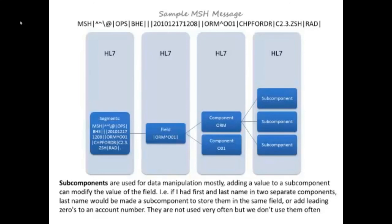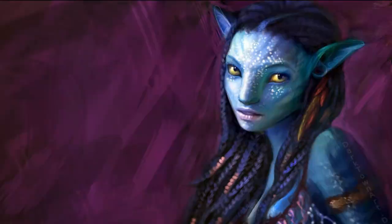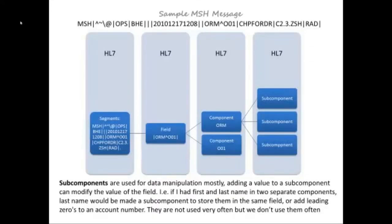So, if we want to build a particular field, we can put the segments that are separated by whatever predetermined delimiter was selected when the message was built. Fields are then broken down into components and then subcomponents. Subcomponents are used for data manipulation mostly. Adding a value to a subcomponent can modify the value of a field. For example, if I had a first and last name in two separate components, last name would be made into a subcomponent to store them in the same field, or adding a zero to an account number.